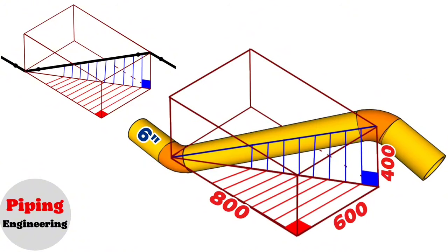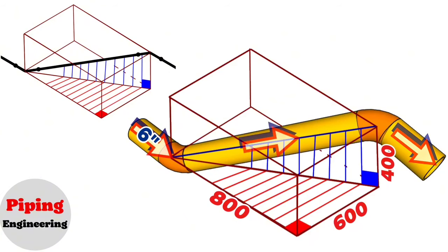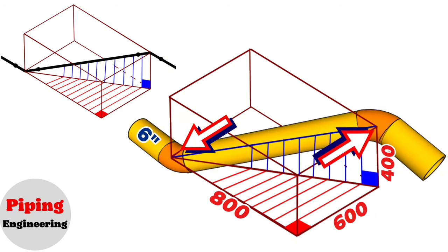The 6-inch pipe first goes southwards, then inclines up to a height of 400 millimeters, and then continues horizontally. The pipeline also turns 600 millimeters eastward horizontally, looking from the second elbow to the first. The first elbow is at the lower right corner of a parallelogram and the second elbow is at the upper left corner.